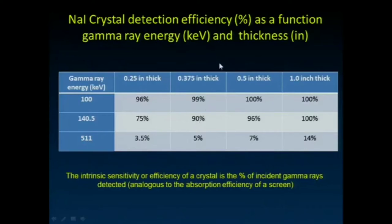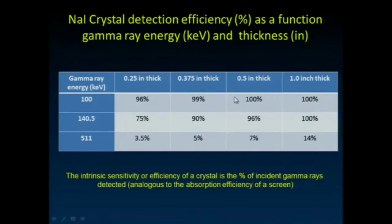Just like with our screens, the thicker we make the crystal, the more room there is for light to diffuse and the worse our resolution properties become. So we don't want to make the crystal thick just for greater stopping power. The three-eighths inch thickness is a nice balance between resolution properties while still stopping the majority of the technetium-99m photons.